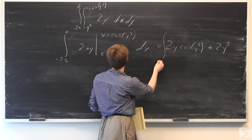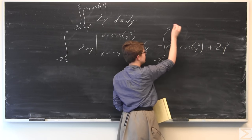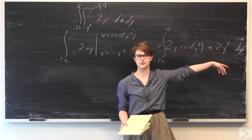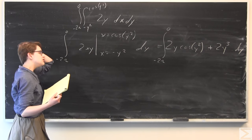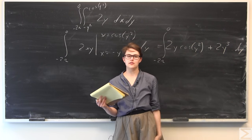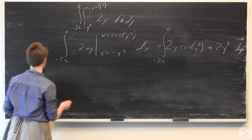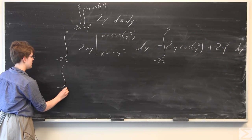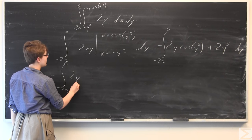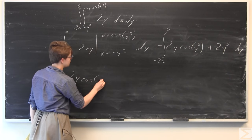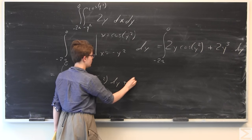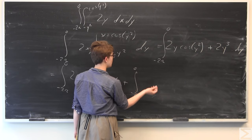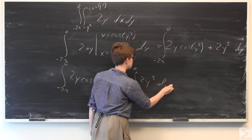We still have to integrate this from negative 2π to 0 dy. We're left with only a function in terms of y, so we're good to go. Using the linearity of the integral, we can break this up into two separate integrals: the integral from negative 2π to 0 of 2y cosine y squared dy, plus the integral from negative 2π to 0 of 2y cubed dy.